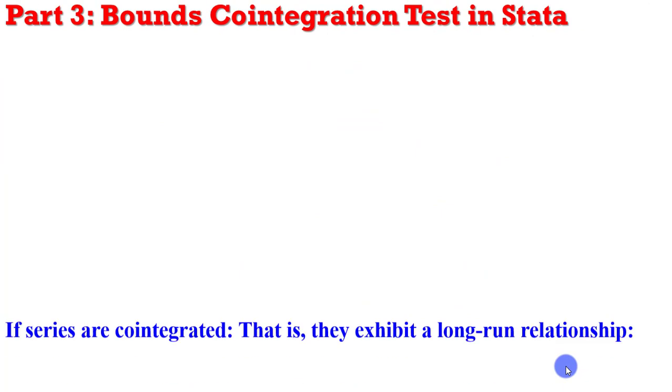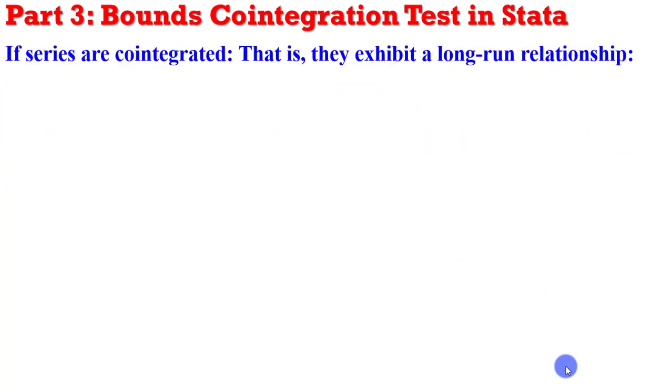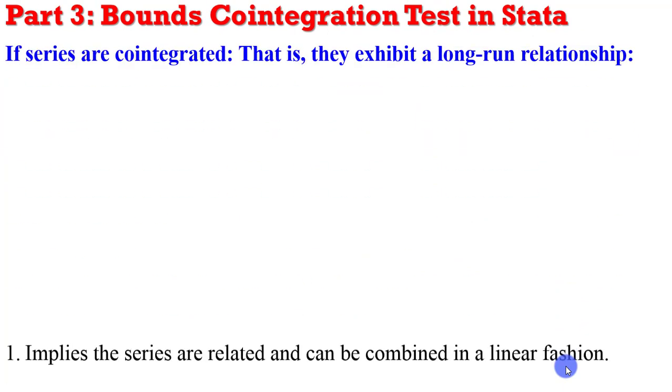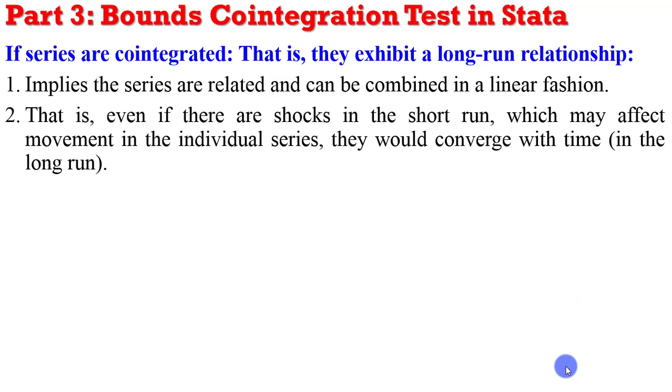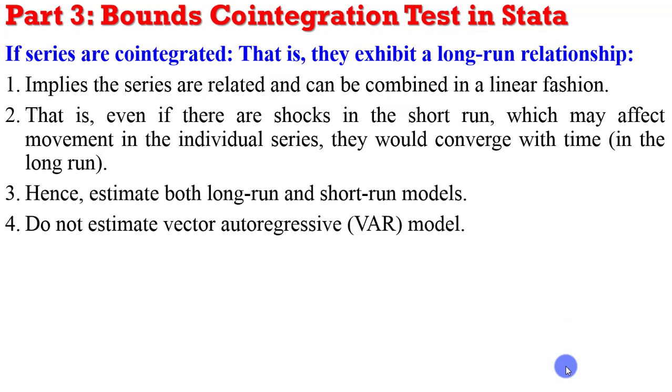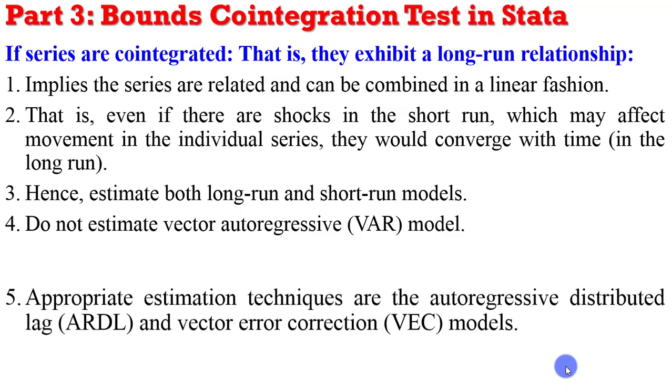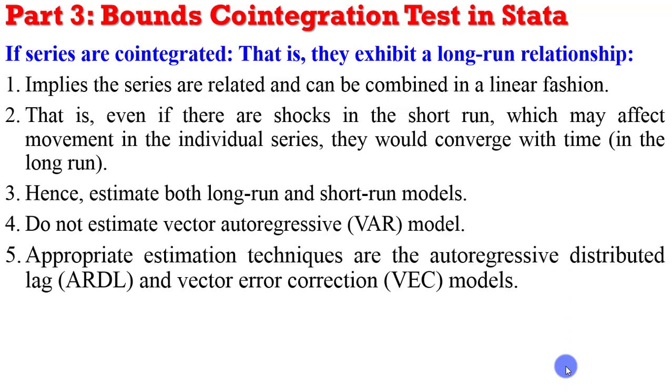If the series are cointegrated, it implies that they exhibit a long-run relationship, meaning that they can be related and combined in a linear fashion. That is, even if there are shocks in the short run, there will be convergence in the long run. In that case, you can estimate both the long and short-run models. The appropriate estimation technique in this case will be ARDL or vector error correction, based on the fact that the series are cointegrated.